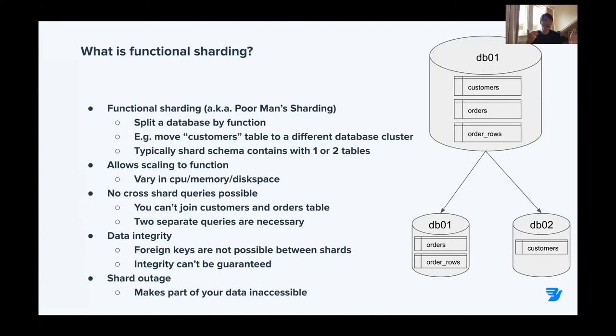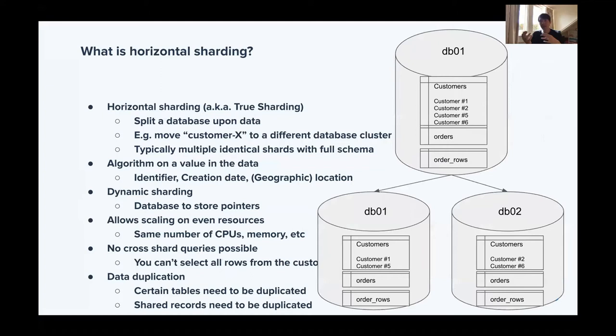With functional sharding, you can no longer join the two tables — the customer table cannot be joined with the orders table. You have to do that with two separate queries and then join the information in the application. That is also a downside for data integrity: since the two are separated, you can no longer use foreign keys. That means if you delete a customer from one database, the orders belonging to that customer still remain in the other, so you basically have no more integrity.